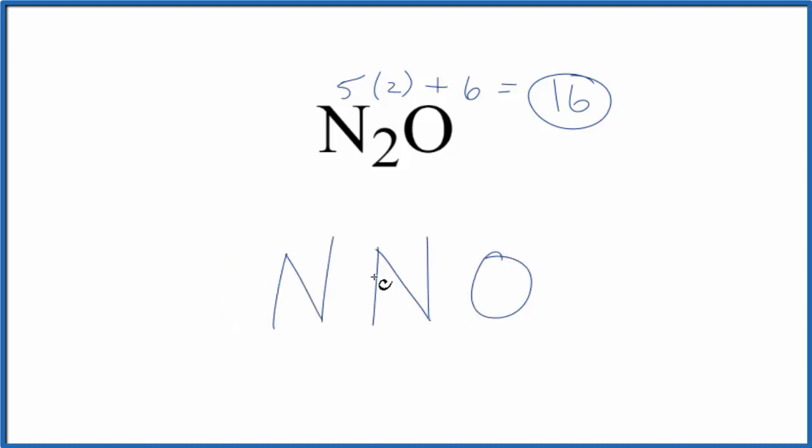Let's put electrons between atoms that'll form our chemical bond. We've used up 2, we have 12 more. Complete the octet on the oxygen. We've used 10, so let's complete the octet on this nitrogen: 10, 12, 14, and then 16. But you can see the central nitrogen does not have an octet.